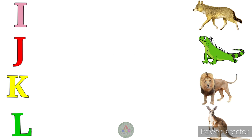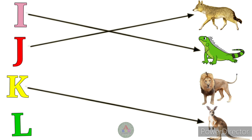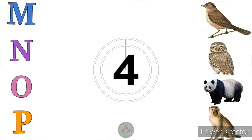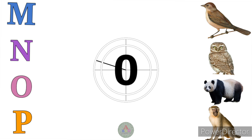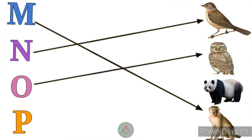I for Iguana, J for Jackal, K for Kangaroo, L for Lion. M for Monkey, N for Nightingale, O for Owl, P for Panda.